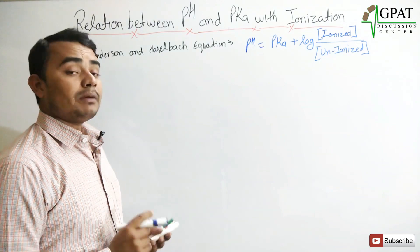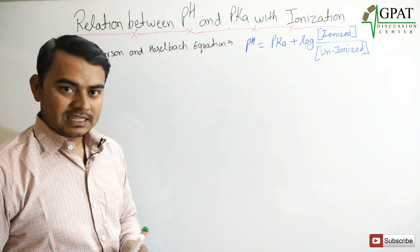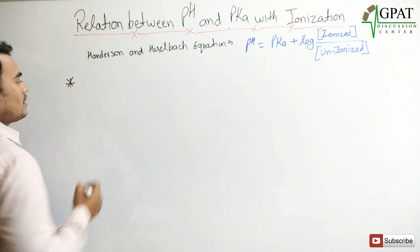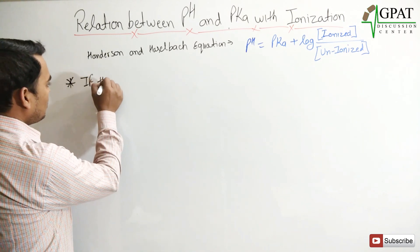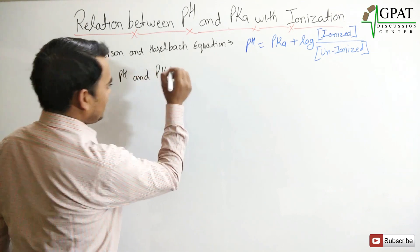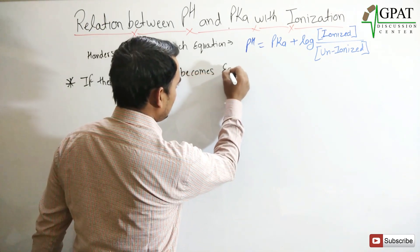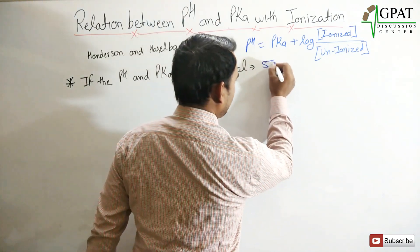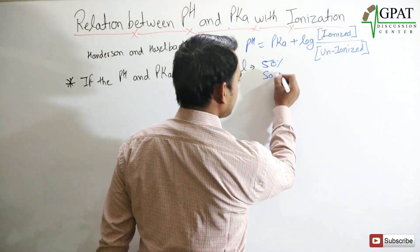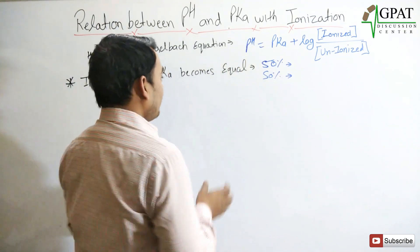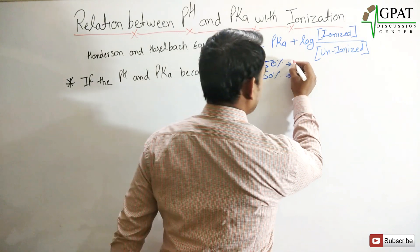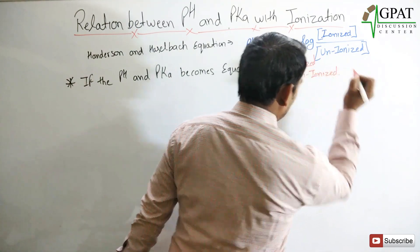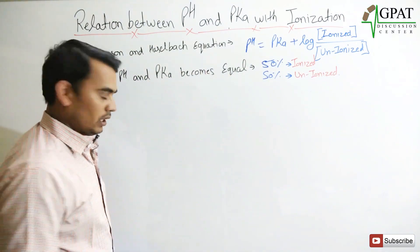When the pH of the medium and the pKa of the drug change, different conditions arise. The first important point: if the pH and pKa are equal, then 50% of the drug will be ionized and 50% will be unionized.